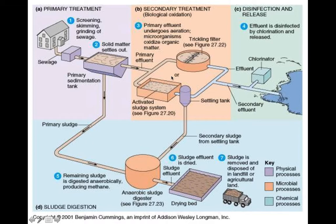At this point the water looks pretty good and pretty clean, but they need to make sure there are no remaining bacteria. In order to ensure that the water going back to the river source is clean, they'll hit it with chlorine and UV light, and also check the pH level.